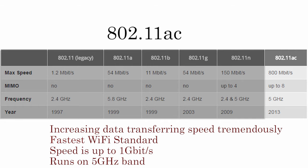Finally, our main topic today: 802.11ac was born. It's meant to increase the data transferring speed tremendously. It's by far the fastest WiFi version, which can reach up to 1 Gbps, and it runs on the 5GHz band.